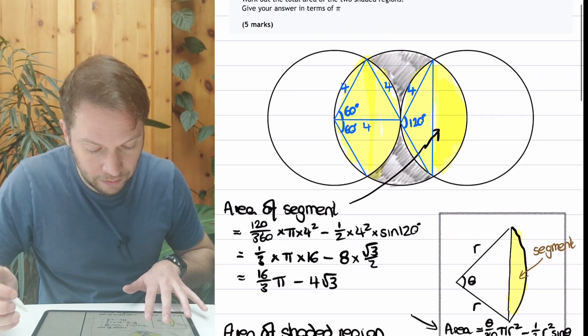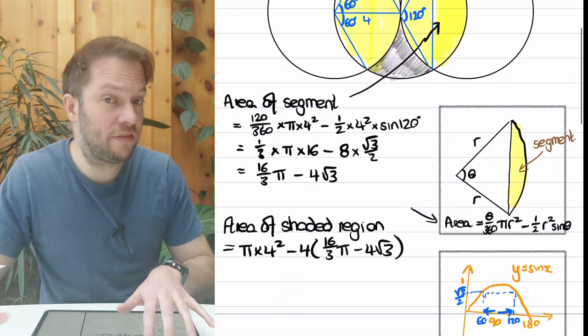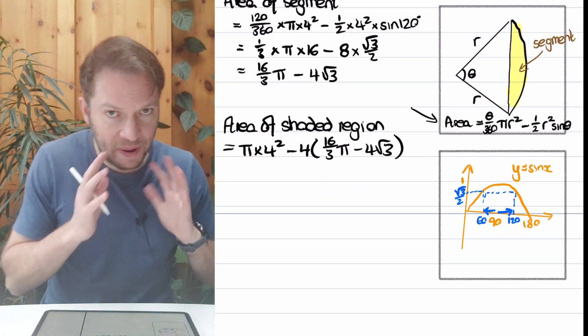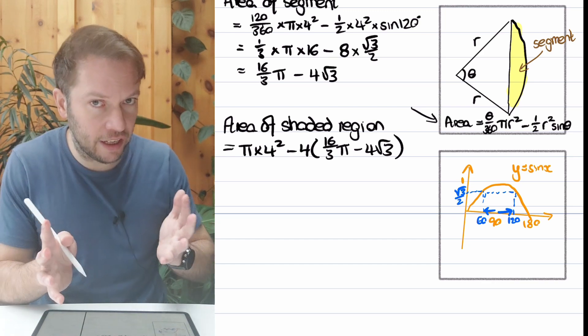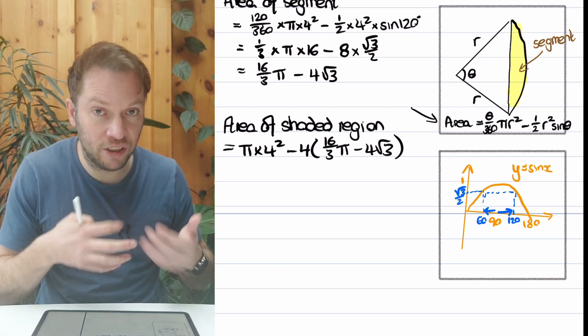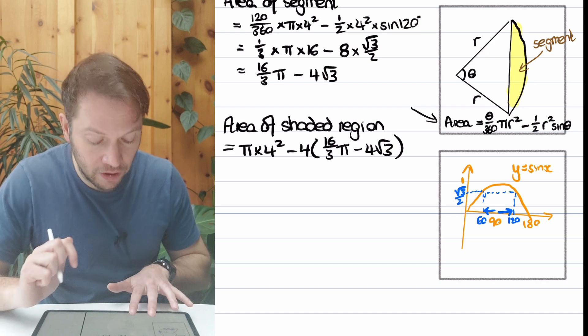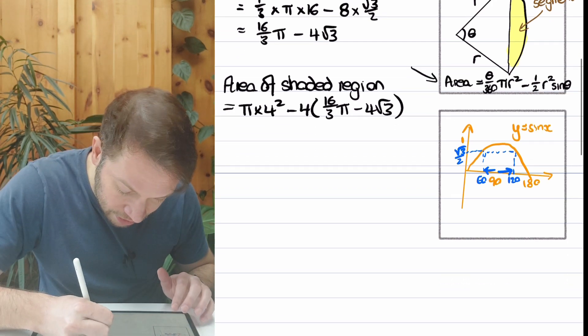Now, the question just says find the total area in terms of π. We've done that. In fact, I think you would probably get full marks for this answer, because it doesn't say simplify. But just for the sake of completion, I am going to do that to get a nice tidy answer.